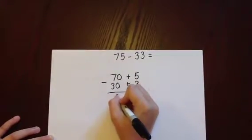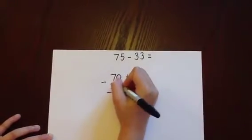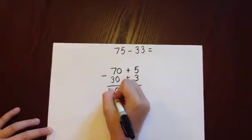0 subtract 0 is 0. And 7 tens subtract 3 tens is 4 tens.